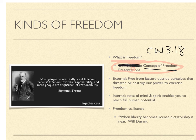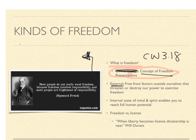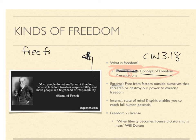For example, we have external freedom. That means being free from factors outside ourselves that would threaten or destroy our power to exercise freedom. So there's the example of being free from poverty. This would be external freedom — it's outside the self.